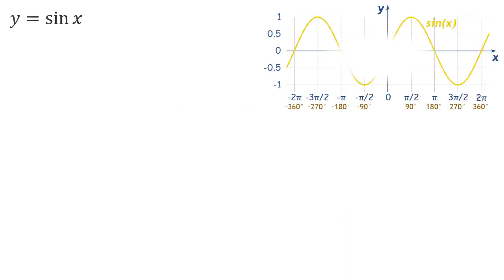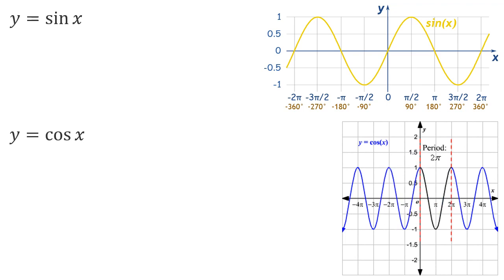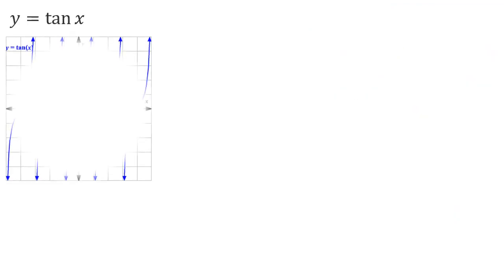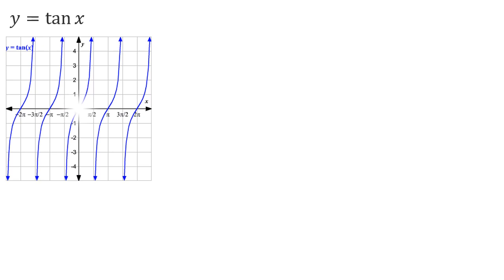Now, if you want to write a trigonometric function, y equals sin x and cos x. Sin 0 is 0, and cos 0 is 1.